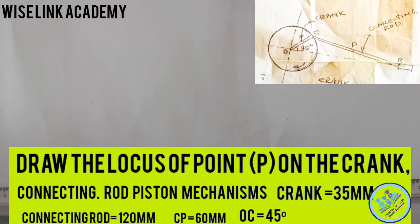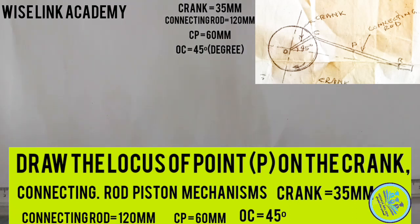Crank is equal to 35mm, that circle we are seeing is called the crank. Connecting rod is equal to 120mm, that is the rod that connects C and R. That long line in between C and R is called the connecting rod. CP, the distance from C to P, is 60mm, and the angle in which your OC forms is 45 degrees.